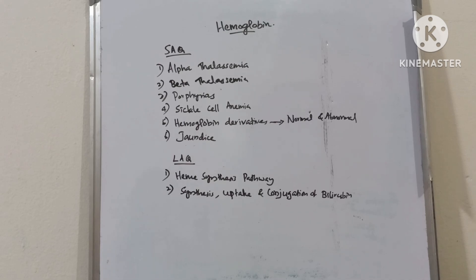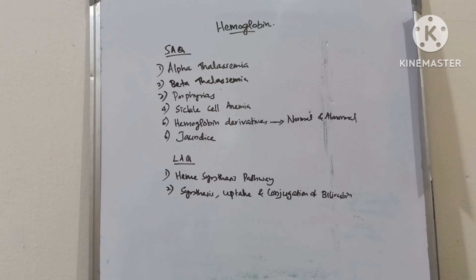Hemoglobin, short answer questions: hemoglobin variants, hemoglobin derivatives, normal and abnormal hemoglobin. Long answer questions: heme synthesis pathway, and synthesis, uptake and conjugation of bilirubin.